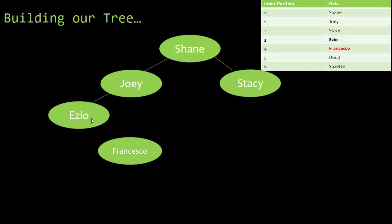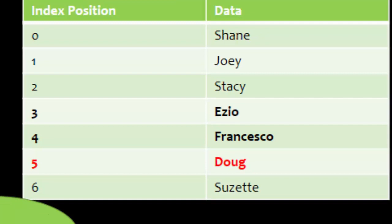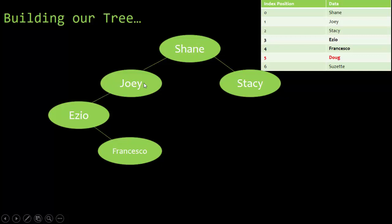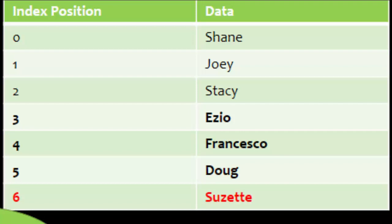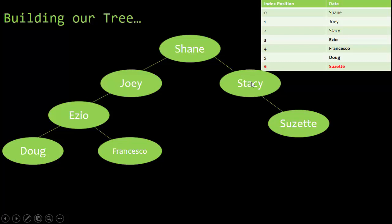Now we do the same with Doug. Doug is less than Shane, less than Joey, less than Ezio — so Doug goes to the left of Ezio, and there's nothing there, so we bring in Doug with a connecting line. Our last item is Suzette. Suzette is greater than Shane and greater than Stacy, so it goes to the right of Stacy.